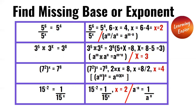3 to the power of 5 times 3 to the power of x is equal to 3 to the power of 8. In this problem, we're doing multiplication of exponents, so we have to add the exponents. 5 plus x is equal to 8. So x is equal to 8 minus 5, which is equal to 3.